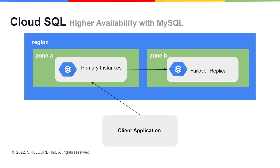Let's take a look at the high availability configuration for Cloud SQL with MySQL. This works by spanning a region and two zones with a primary MySQL instance that replicates to a failover replica. The client application communicates with the primary instance either via its IP address or a connection with the Cloud SQL proxy. In the unlikely event of a zonal outage in GCP, the primary instance will be lost. However, the IP address and connection details are simply transferred to the failover replica, and an application may just have to reconnect to the database, but it won't need to change any configuration to do so.